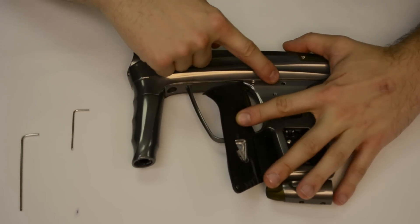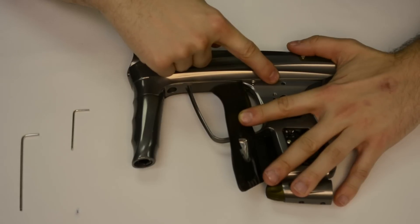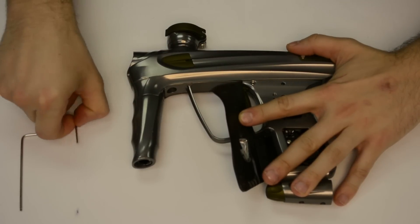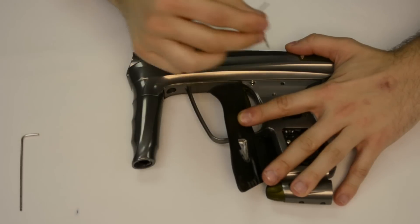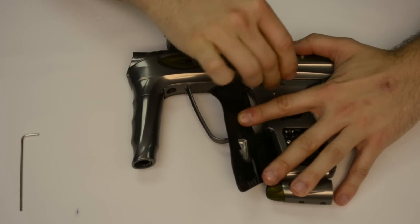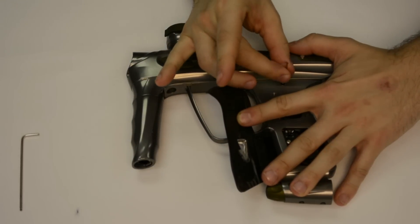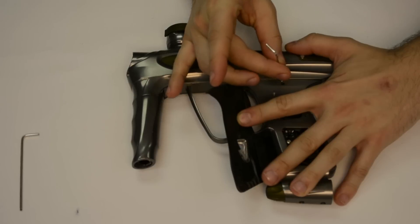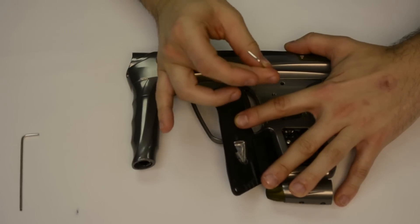We will be removing the top screw visible through the top hole. Using the 1/16th allen key, we will reach into the top hole. The feather touch screw may come out when you remove the allen key, but be careful not to lose it.